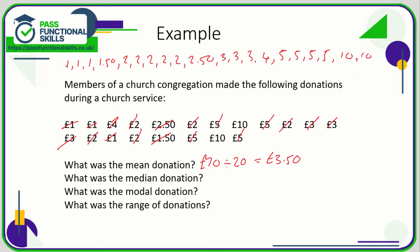The median is going to be the value in the middle, so I'm going to cross one off each side. To speed things up, I'll cross off five from the left and five from the right first, then go back to crossing off one at a time — one on the left, one on the right — until we find the middle.